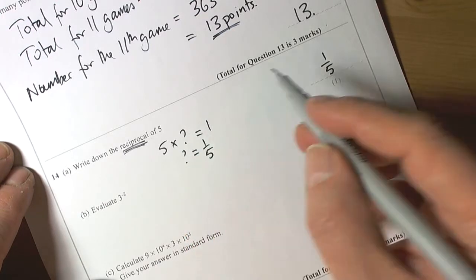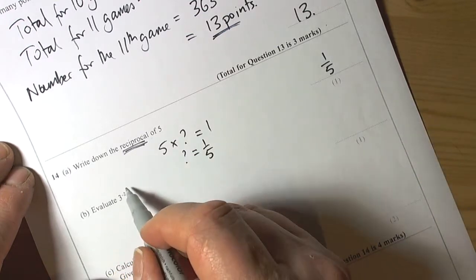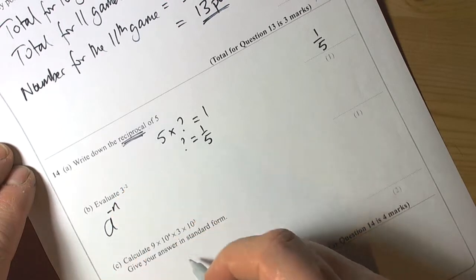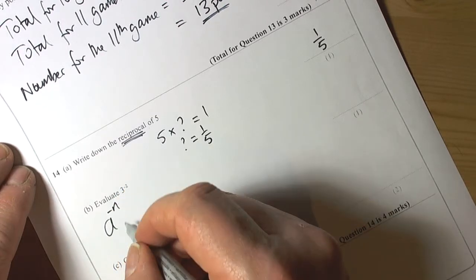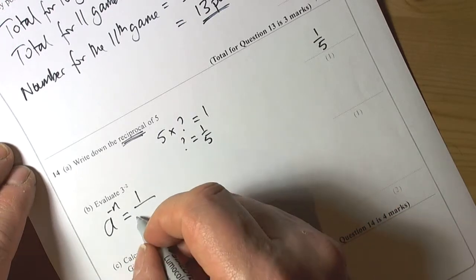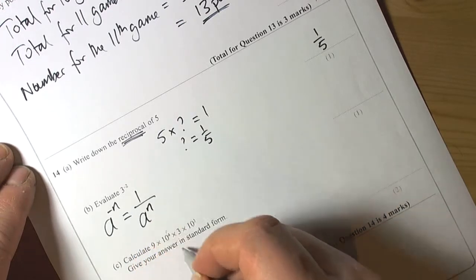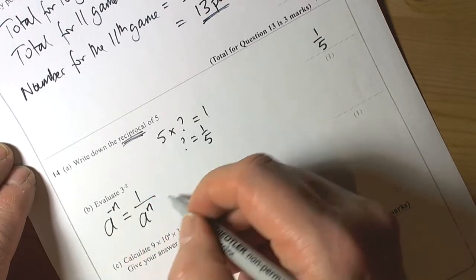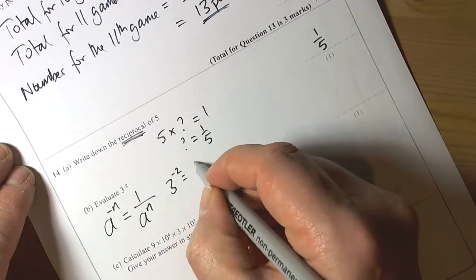To evaluate something to the power of negative two, we need to remember our rules of indices and powers. When we've got a negative power, it's always take the reciprocal, one over, and divide by the base number raised to this power.